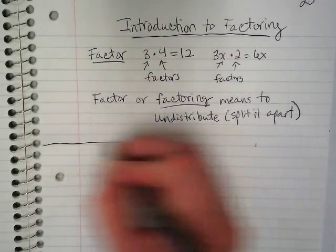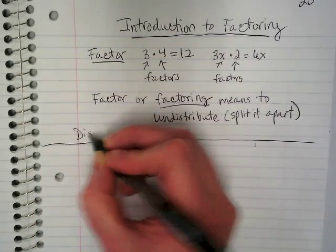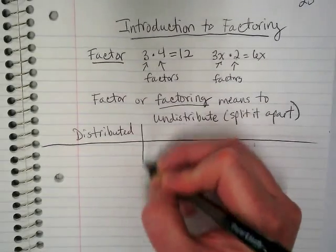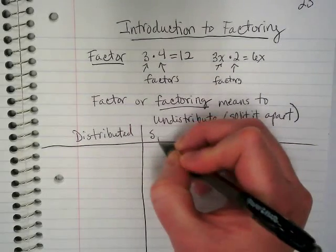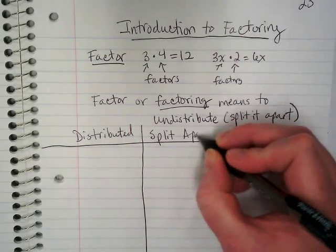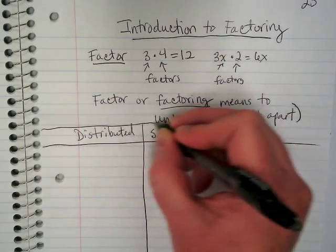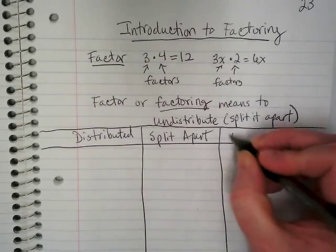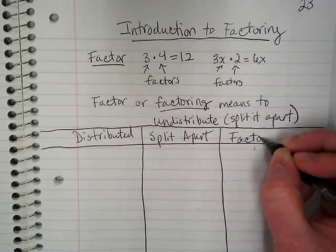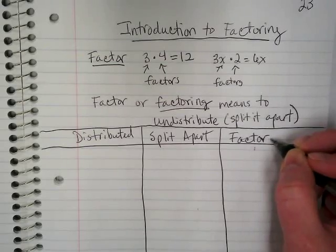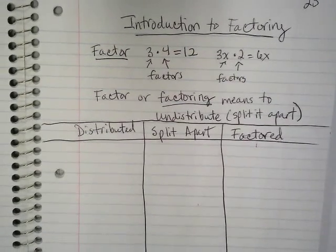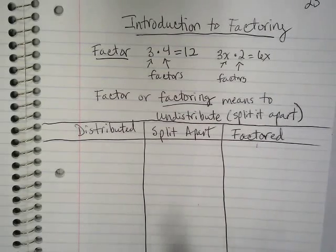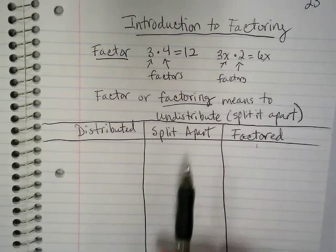So let's make a quick table here. We're going to have the distributed version, the split apart part, and then over here, this is the factored version. Notice I've got the -ed on both, because when they're there, it will already have happened. The split apart is where we're going to show the action of factoring.